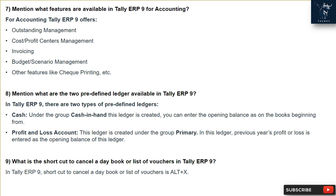Question 8: What are the two predefined ledgers available in Tally ERP9? In Tally ERP9, there are two types of predefined ledgers. Cash, under the group Cash-in-Hand — this ledger is created and you can enter the opening balance from the books beginning. Profit and Loss Account — this ledger is created under the group Primary, and the previous year's profit or loss is entered as the opening balance.